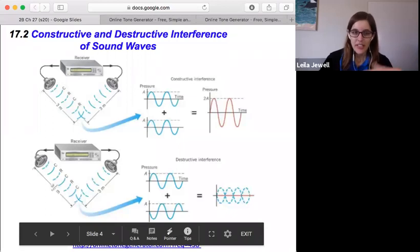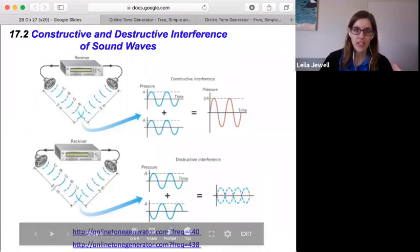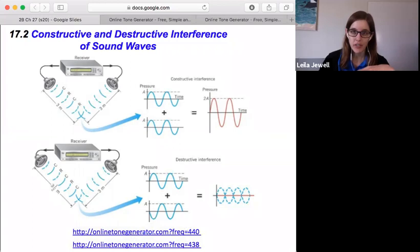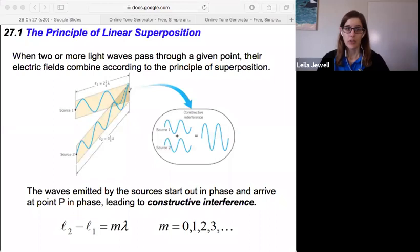That gives us some sense of the idea of constructive and destructive interference with sound. Now for chapter 27, we're going to focus on how that applies to light.